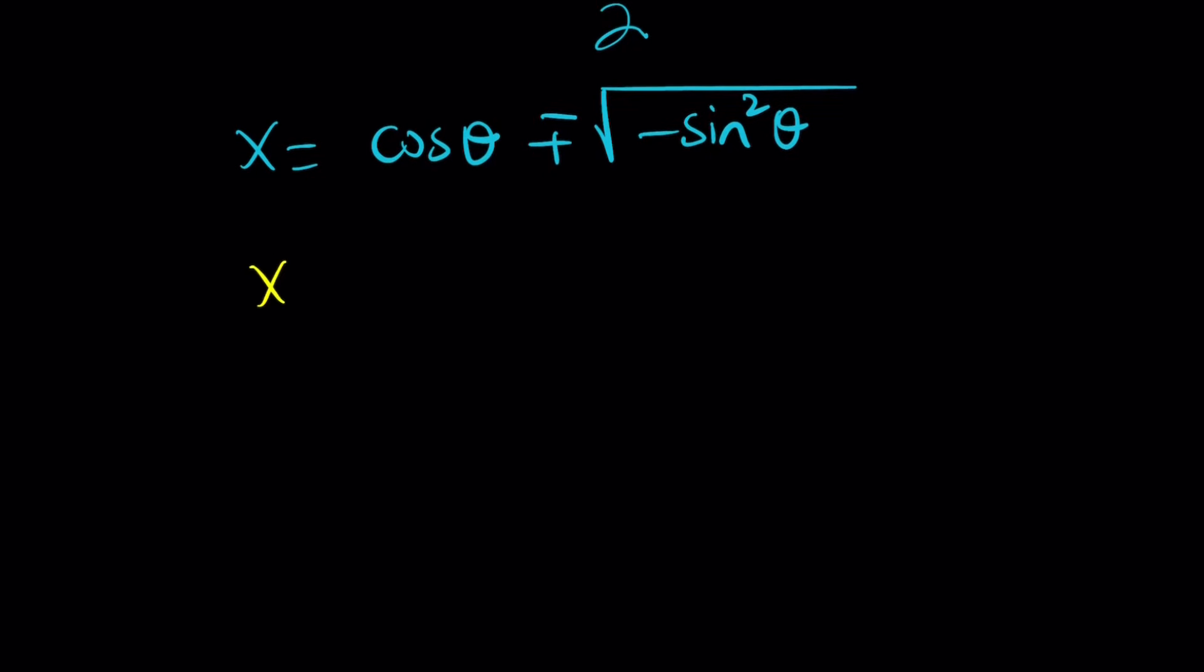We're going to use complex numbers. Yes. That's why they're awesome. And basically, you can write this as negative 1 times sine squared. And the square root of negative 1 is going to be plus minus i, but plus minus is already there. So we can basically write this as cosine theta plus minus i times sine theta. Isn't that awesome?